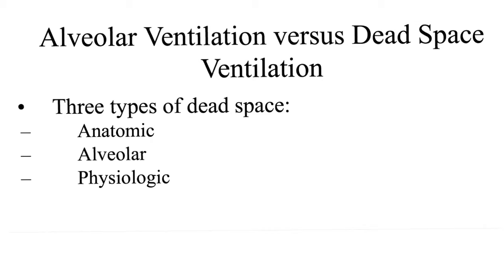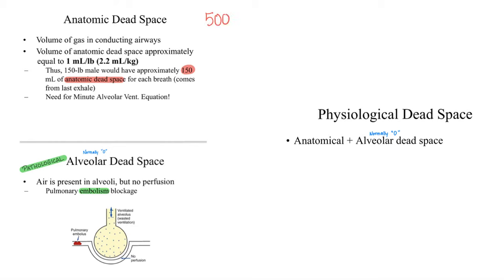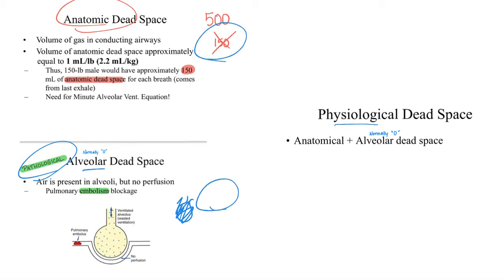There are three types of dead space: anatomical (normal), alveolar (abnormal), and physiological (anatomical plus alveolar). Out of the normal 500 mL tidal volume, 150 mL do not contribute to gas exchange — that's the anatomical dead space. Alveolar dead space consists of bad alveoli not involved in gas exchange — this is pathological. For a normal person: anatomical dead space = 150 mL, alveolar dead space = 0 mL, so physiological dead space = 150 mL.